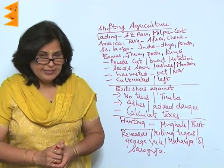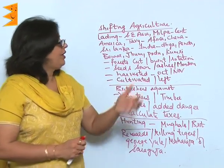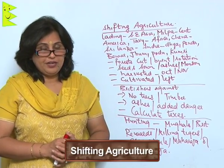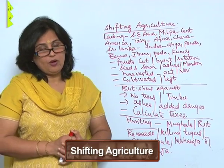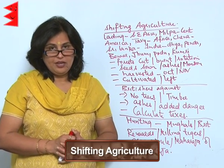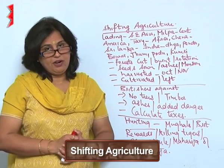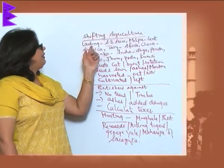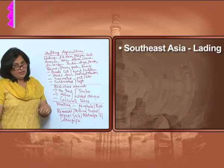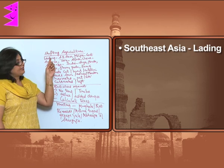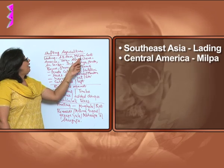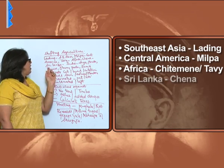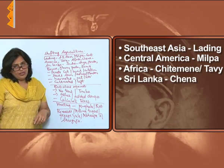Let's learn about shifting agriculture and the names it is known by in various parts of the world. In India and Southeast Asia it is called Luding, Milpa in Central America, Tavi in Africa, and Chenna in Sri Lanka.